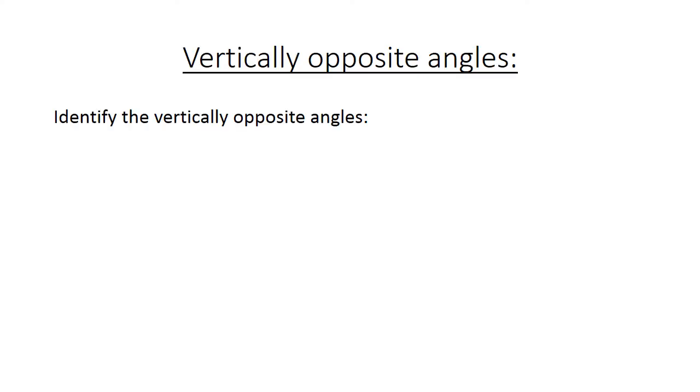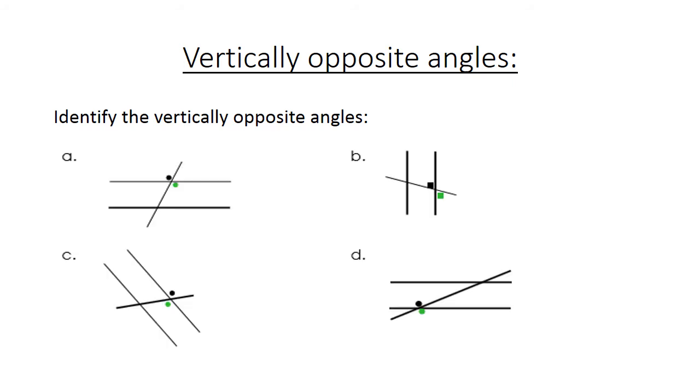Vertical opposite angles. Identify the vertical opposite angles. Number A, you can see this one and also the black one. B, also vertical opposite angles. C, also vertical opposite angles. And D, also vertical opposite angles.